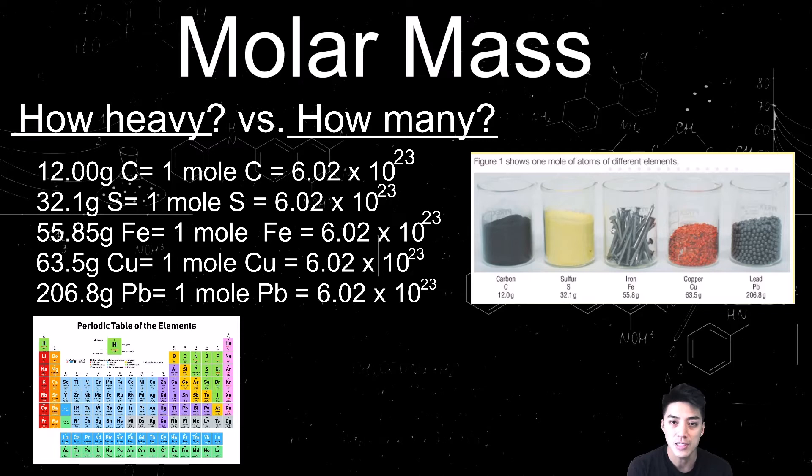Now, with the help of the periodic table, you can actually find the molar mass of any element. So let's just take carbon, for example. So if I have 12 grams of carbon, that means how heavy, I can find out how many atoms of carbon I have. And it turns out I have 6.02 times 10 to the 23rd atoms. And that, by the way, is 1 mole of carbon.